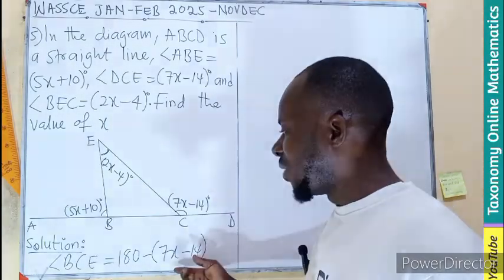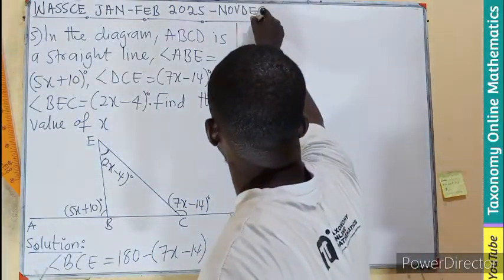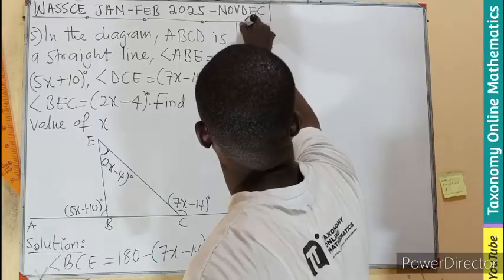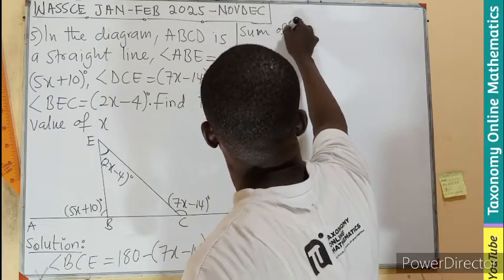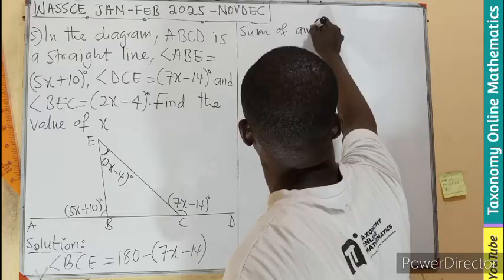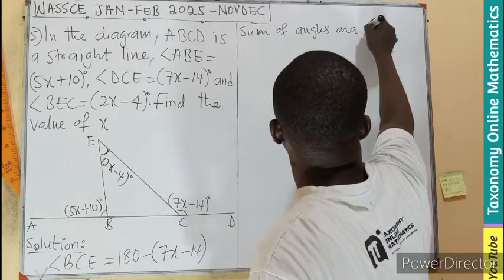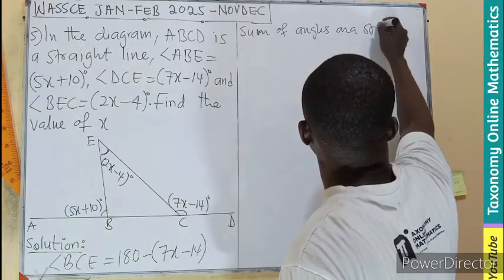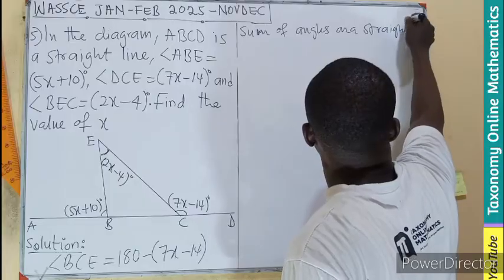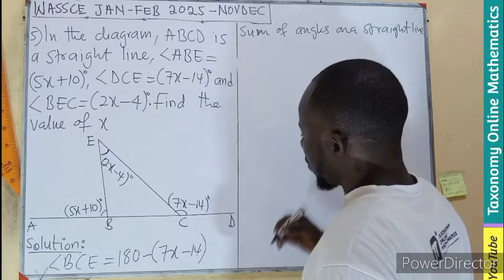What property is going to be this? Sum of angles on a triangle, right? So we have sum of angles on a straight line. It should be a straight line, not a triangle.